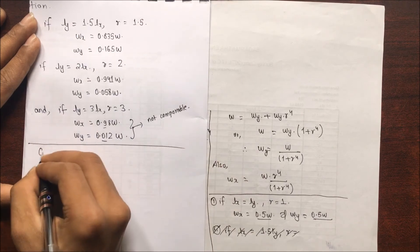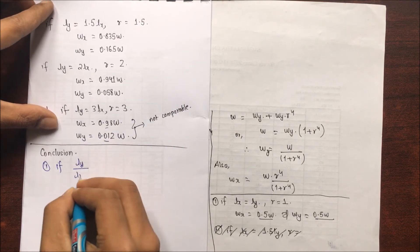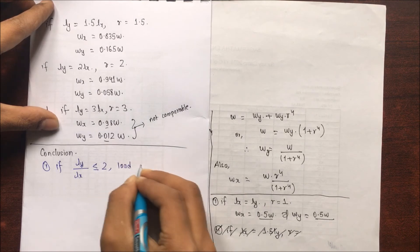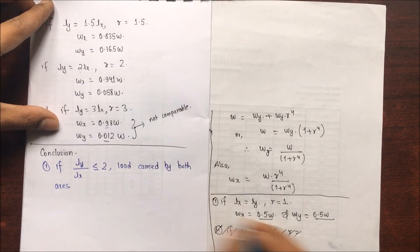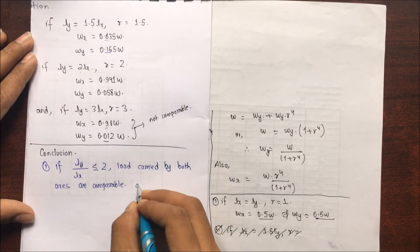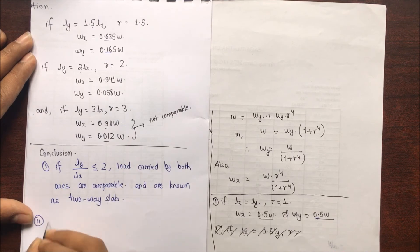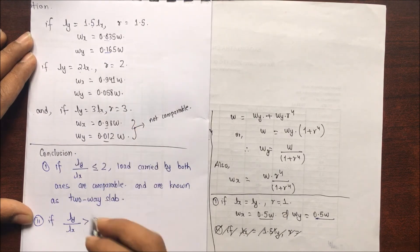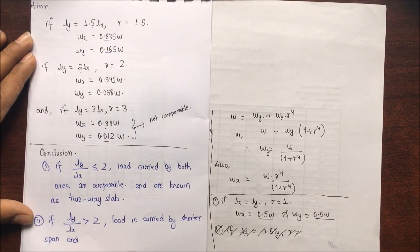If Ly / Lx is less than or equal to 2, load is carried by both axes in a comparable and significant distribution — these are known as two-way slabs. If Ly / Lx is greater than 2, the load distribution is incomparable and load is carried by the shorter span only — this is known as a one-way slab.